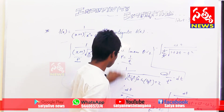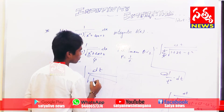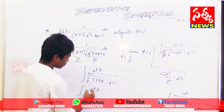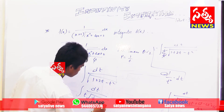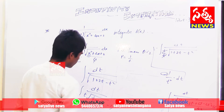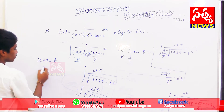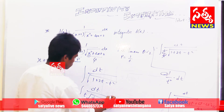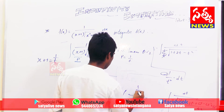So we are left with: integration of dt divided by the square root of (1 + 2t minus t²). Rearranging inside the root by completing the square, we get a standard integrable form. We can then replace 1/t back with x + 1 for back-substitution.